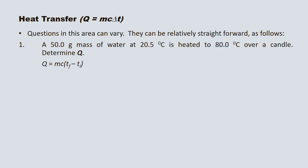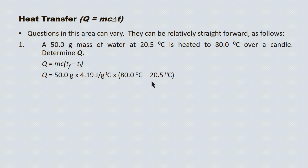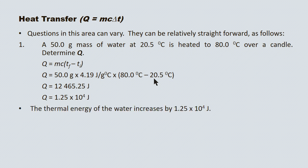We start with our equation. In this case I'm using Tf minus Ti, simply because the question gives us a Ti and a Tf. We substitute into the equation — there's our mass, there's our specific heat capacity, and there's our Tf minus Ti. We come up with a raw value of 12,465.25 joules. Analyzing for significant digits, the question has three throughout, so following the multiplication rule we use three sig digs. Our final answer is 1.25 × 10⁴ joules. The thermal energy of the water increases by 1.25 × 10⁴ joules.